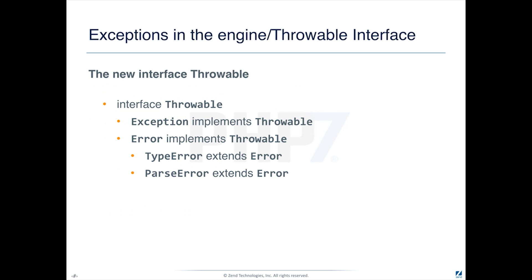The new throwable interface is implemented by the existing Exception — Exception now implements the throwable interface. Error is a new class, and Error also implements throwable. And underneath Error, we have new things like TypeError and ParseError. TypeError is what is thrown when you have type hinting turned on and you violate the API's contract — you try to pass a string in when it's requiring an int or something like that. You'll get a TypeError.